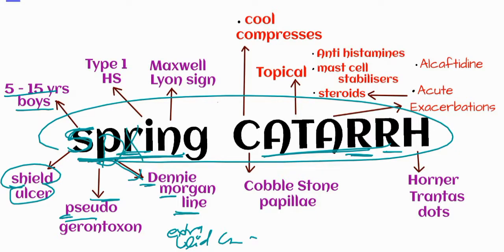'I' is similar to number one, so with this we can remember type one hypersensitivity reaction. Combining 'I' and 'N' gives us 'M' — with M we can remember Maxwell-Lyon sign, which means ropy discharge. This completes the 'SPRING' part of the mnemonic.